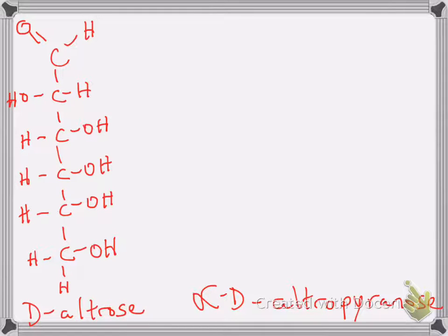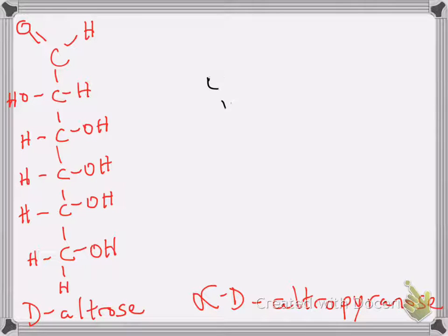Anytime I start off on one of these structures, the first thing I do is number the carbons. Notice there is a chain of carbons in this molecule. Because monosaccharides are basically aldehydes and ketones, going back to organic chemistry, the carbonyl carbon of an aldehyde or ketone gets the lowest number possible when numbering carbons. The carbonyl carbon is the one that's double bonded to an oxygen. There are six carbons in the chain, so we'll number them one to six. Numbering from the top gives the carbonyl carbon the lowest number possible — carbon number one.